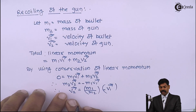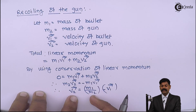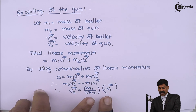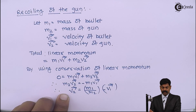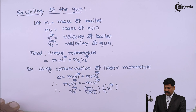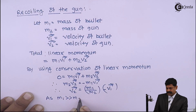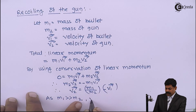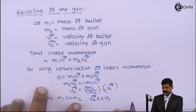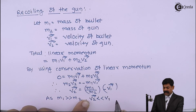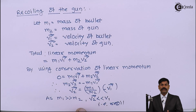V2 is the velocity of the gun, V1 is the velocity of the bullet, and M1, M2 are the masses of the bullet and gun respectively. The negative sign indicates the velocity of the gun is in the opposite direction to the bullet. Since the mass of the gun M2 is greater than the mass of the bullet, the velocity of the gun is much less than that of the bullet — this is what we call recoil. Thank you.